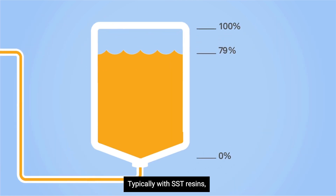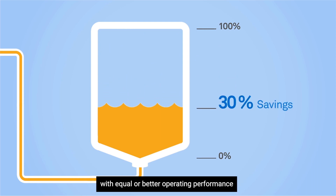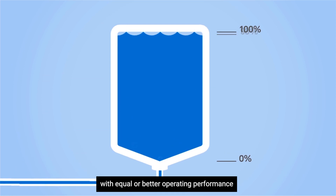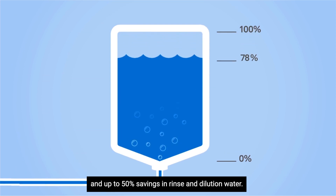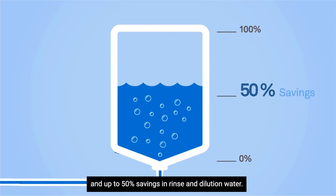Typically, with SST resins, you save 20-30% on regeneration chemicals with equal or better operating performance, and up to 50% savings in rinse and dilution water.